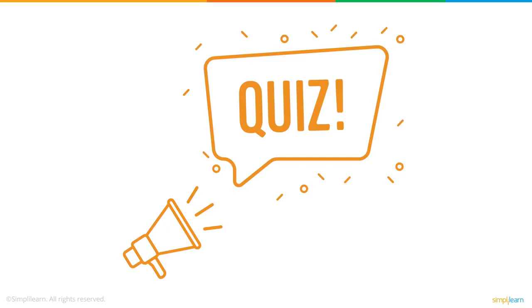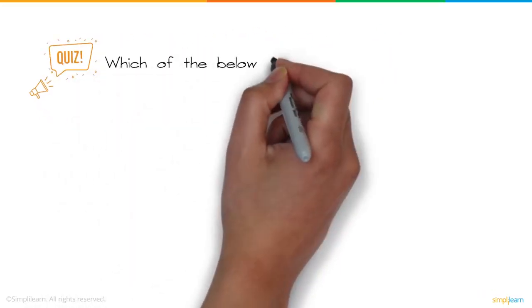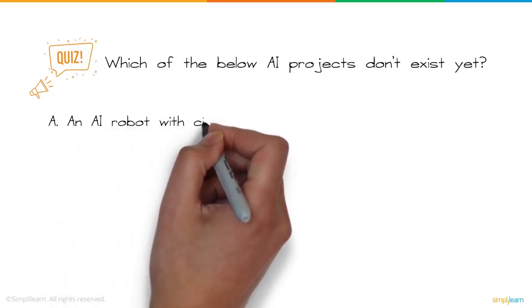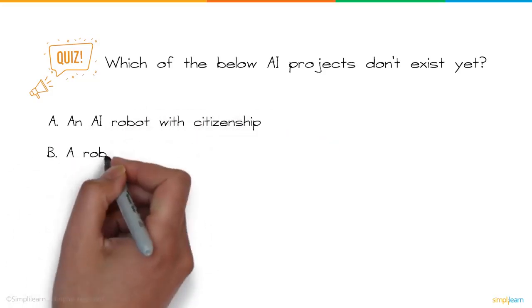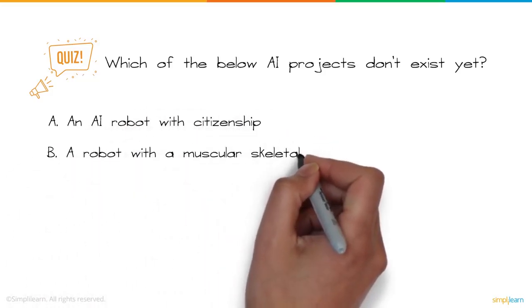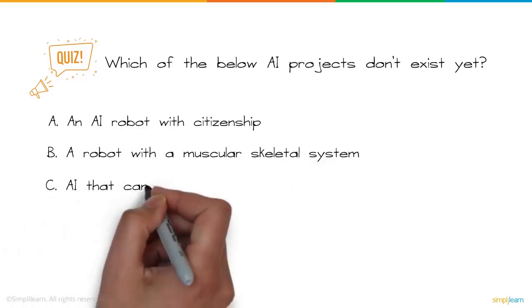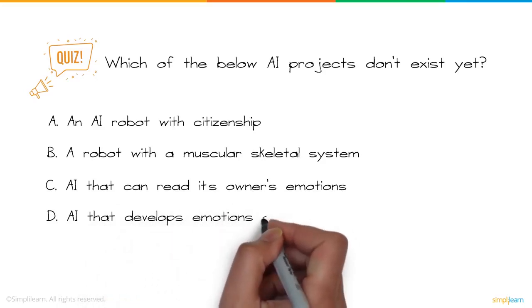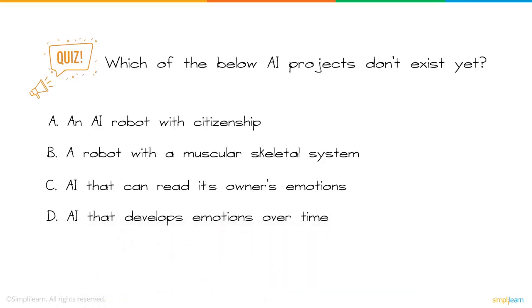So here's a question for you. Which of the below AI projects don't exist yet? A. An AI robot with citizenship. B. A robot with a muscular skeletal system. C. AI that can read its owner's emotions. D. AI that develops emotions over time. Give it a thought and leave your answers in the comment section below.